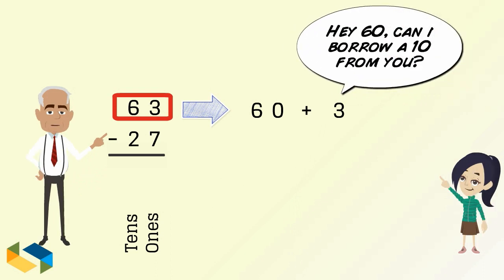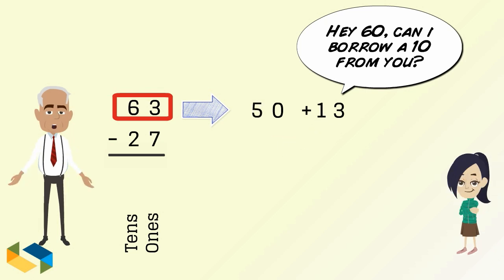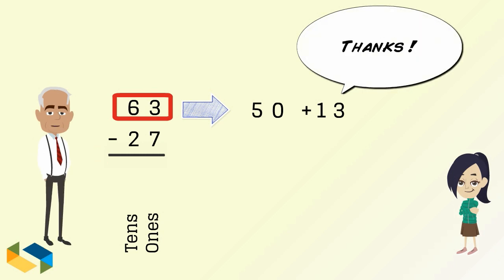Imagine the number 3 requesting a 10 from the number 60. It borrows a 10. So the number 63 becomes 50 plus 13.